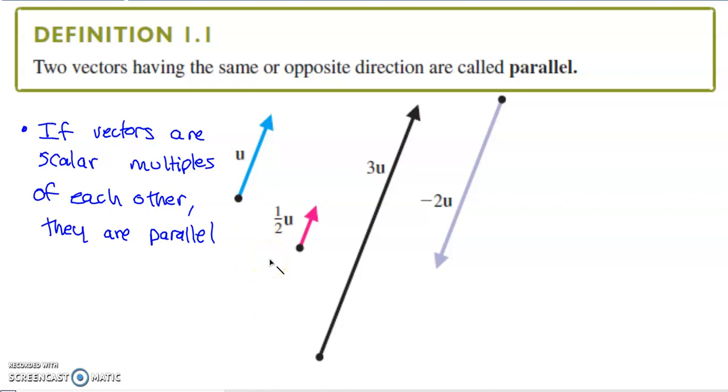One property that vectors traveling the same or opposite directions always have is that they're scalar multiples of each other. This is supported by the batch of vectors we've been talking about—these vectors are all just vector u multiplied by different values. If you take a vector, multiply it by a number, and generate a new vector, that new vector is parallel to the original vector, regardless of whether it travels the same or opposite direction.